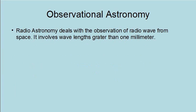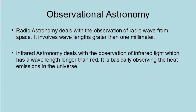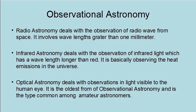Radio astronomy deals with the observation of radio waves from space, involving wavelengths greater than one millimeter. Infrared astronomy deals with the observation of infrared light, which has a wavelength longer than red — it is basically observing the heat emissions of the universe. Optical astronomy deals with observations in light visible to the human eye. It is the oldest form of observational astronomy and is the type common among amateur astronomers.